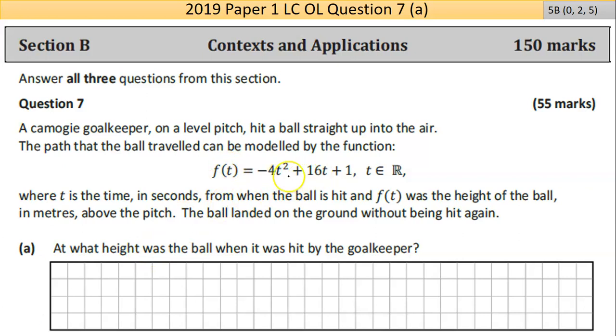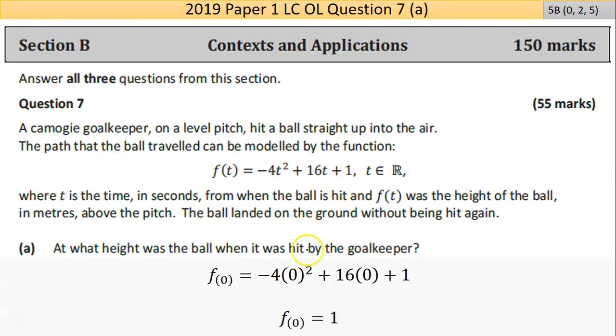Part A says, at what height was the ball when it was kicked by the goalkeeper? When the ball was kicked, what was the time? Well, it was zero, so both these terms are going to go away, and you're left with one. I've just substituted zero in for the time. Anything times zero is zero, so they've gone away.